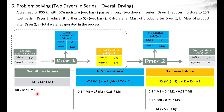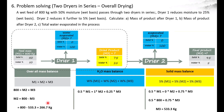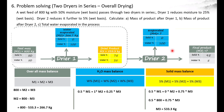Substituting M3 into the overall mass balance equation: M2 equals 800 minus M3. M3 is 533.3 kg, so M2 equals 800 minus 533.3, which is 266.7 kg. Both M2 and M3 values for Dryer 1 have now been calculated. Moving on to Dryer 2, I enter the M3 value of 533.3 kg as the inlet stream.